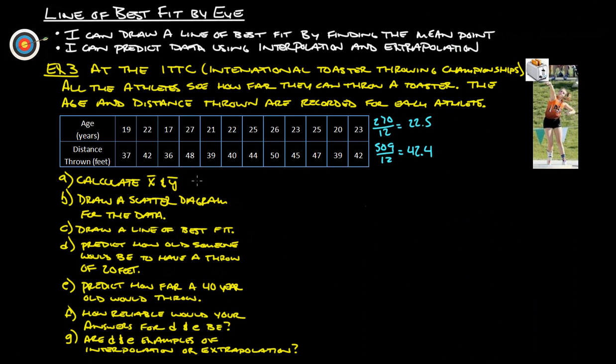So calculate x̄ and ȳ - that's what we just did. That means our mean point is going to be (22.5, 42.4). This has to be on our best fit by eye line.